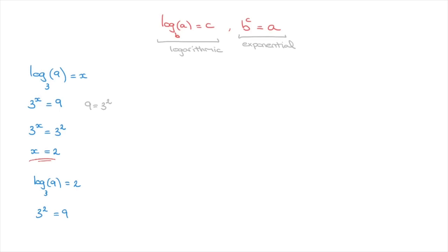As another example, say we have to calculate log base 2 of 16. Again, our starting point is to keep in mind that this has to equal to something, so let's say this equals to x. This equation is written in logarithmic form, so our first step is to rewrite it in exponential form. So that would be 2 to the power of x equals to 16. We can see that on the left-hand side we have 2 raised to the power of x.